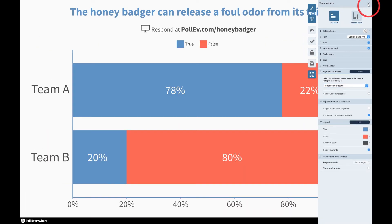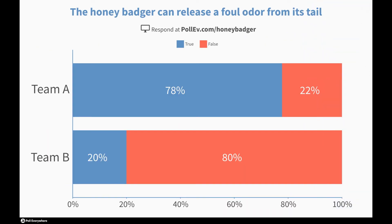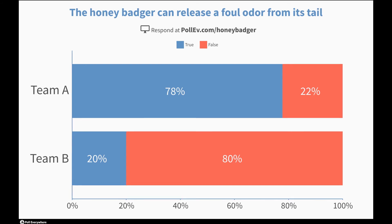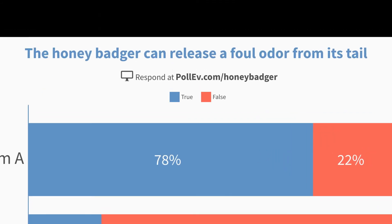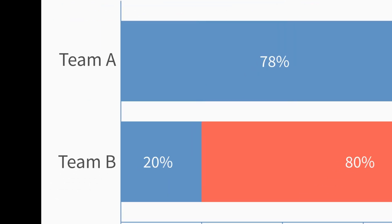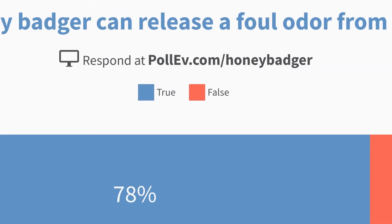Alright, the data has been segmented. The look of the poll has changed so that now I can clearly see how people on teams A and B responded to this question. That question is still here at the top, but now the team names are on the label axis, and the responses have been moved to the legend above.